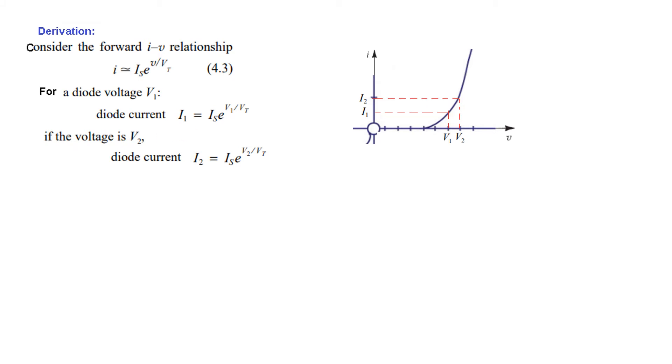It will be now I2. Here it will be V2. Now if we divide I2 by I1, we get this relation. I hope you can do this. And now since there is a base of E, so to simplify we will take natural log. So taking natural log on both sides we get V2 minus V1 is equal to Vt log natural I2 over I1.